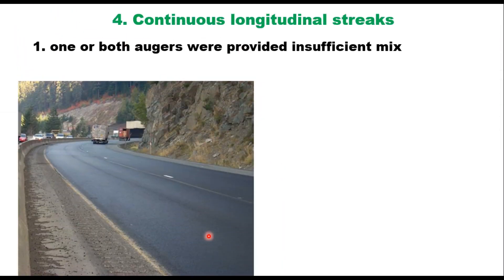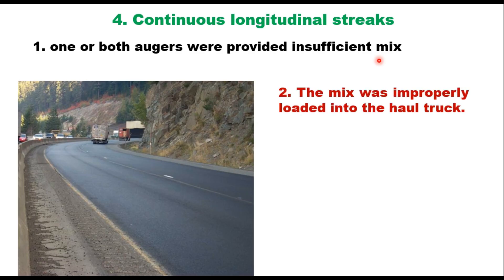Fourth is continuous longitudinal streaks, and it can occur due to several reasons. The first reason is that one or both augers were provided insufficient mix. To avoid that, the mix should always be held close to the axle of the augers and at an even height across the auger chamber. The second reason is that the mix is improperly loaded into the truck. If the mix is not loaded in the center of the width of the truck bed, the coarse aggregate particles may roll to one side and accumulate along that side, and when the mix is delivered to the paver hopper, the segregation will appear as a longitudinal streak on one side of the paver only.